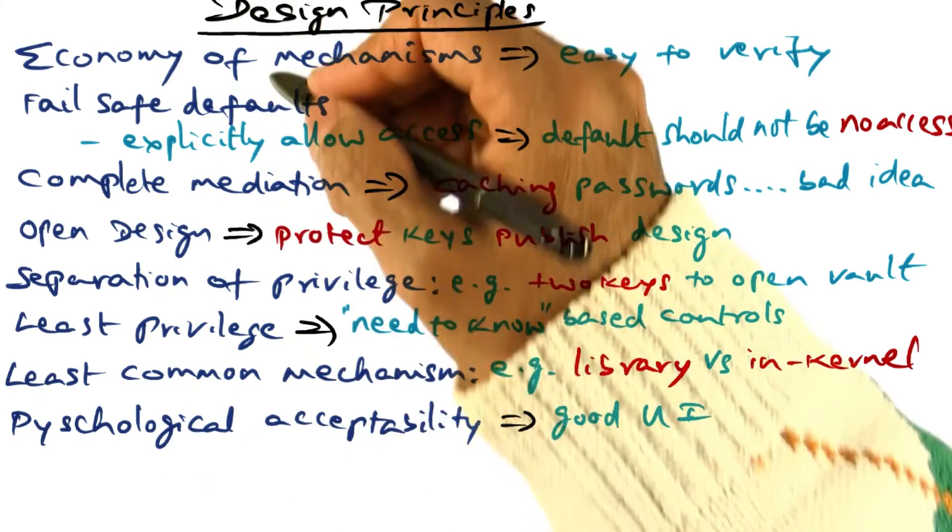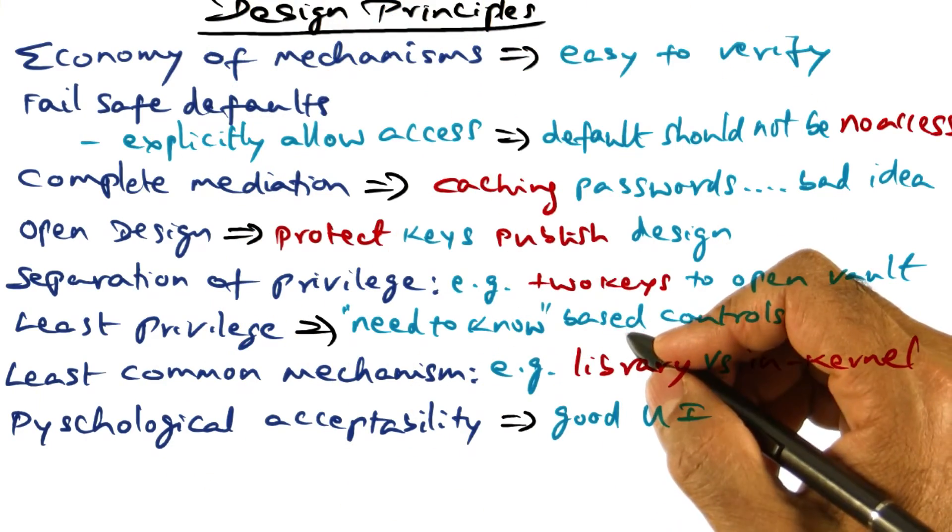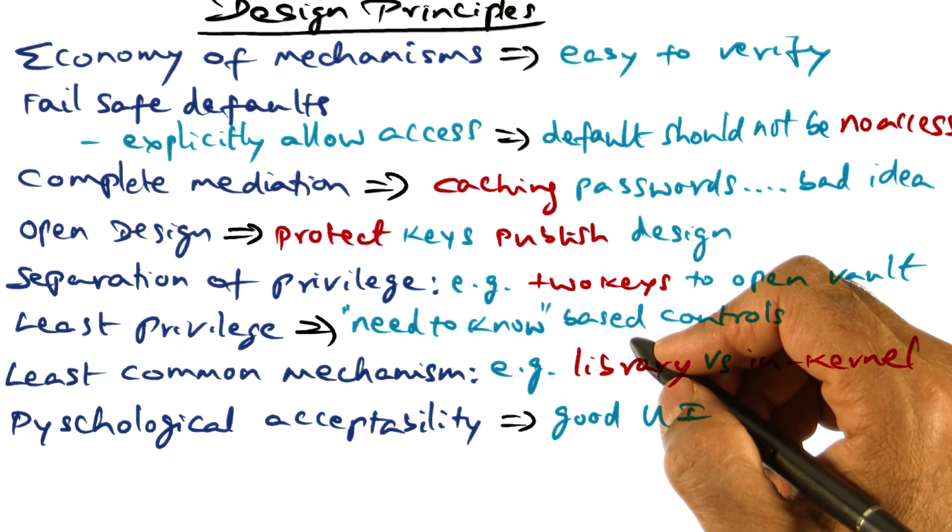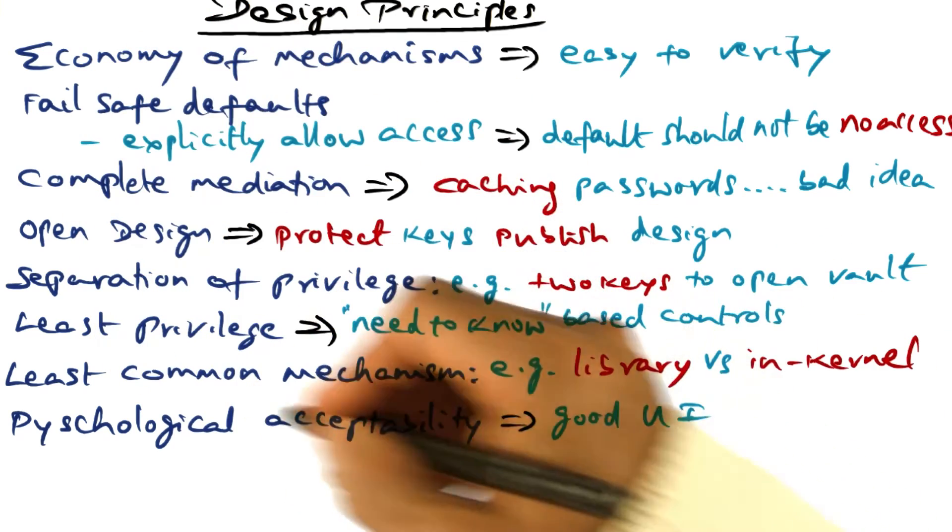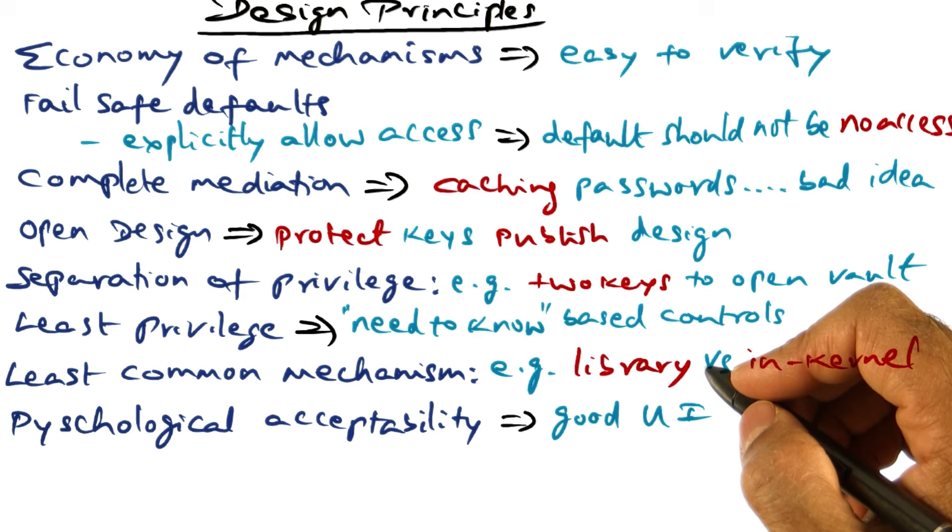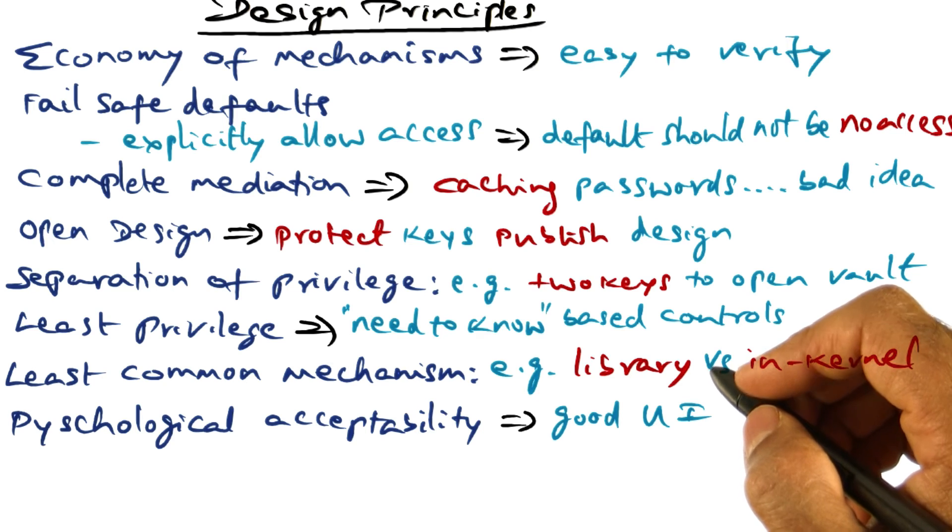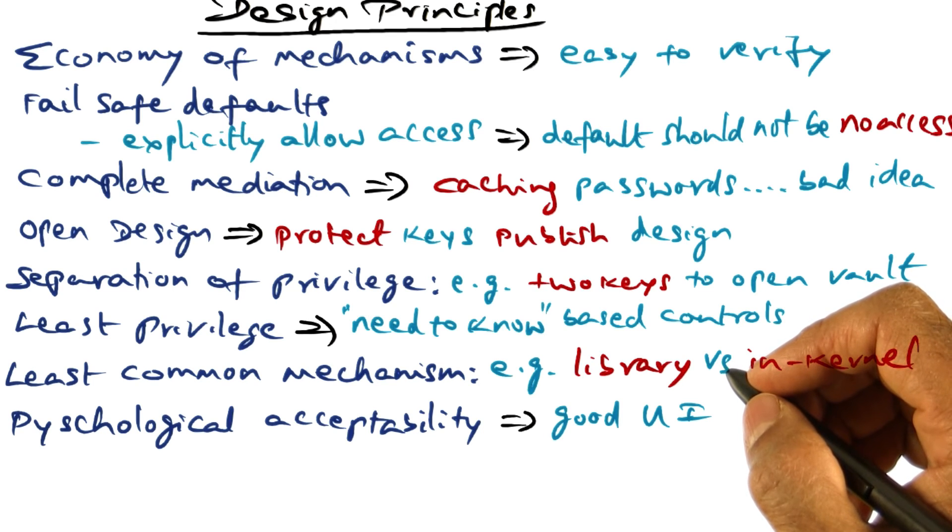Two things jump out when you look at this set of design principles that was laid out by Saltzer in his seminal paper back in the early 1970s. The first thing that jumps out is all of these are positive statements, not negative statements. I mentioned earlier that saying 'my system prevents all violations' is a negative statement because it's saying that my system is bulletproof. No system is bulletproof.